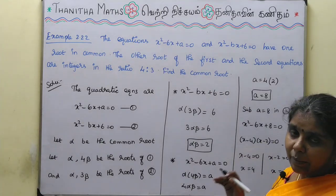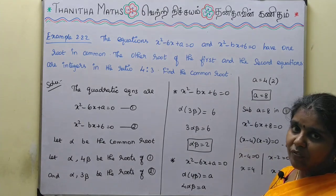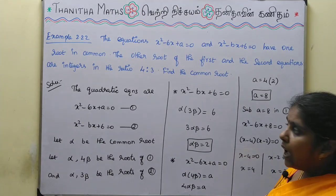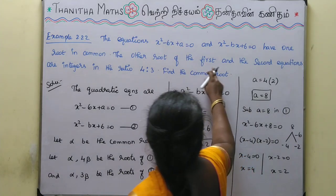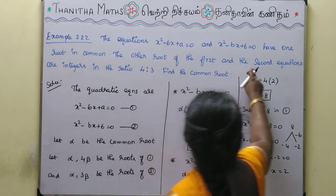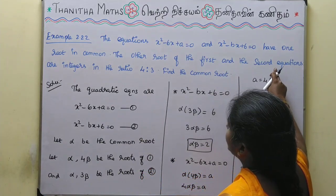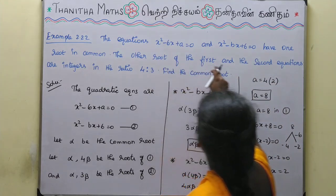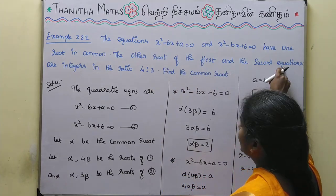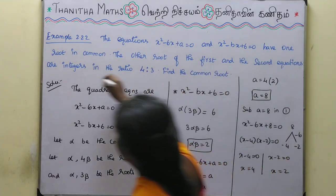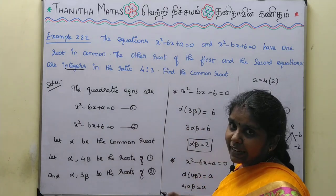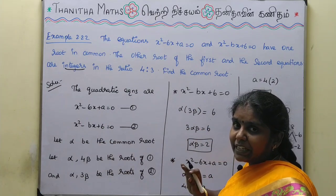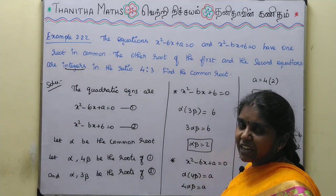This gives x equals 4 or x equals 2. One of these is alpha and the other is 4 beta. Now the condition states the other roots must be integers, so beta must be an integer.